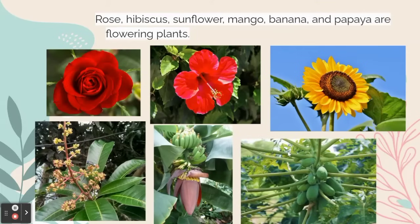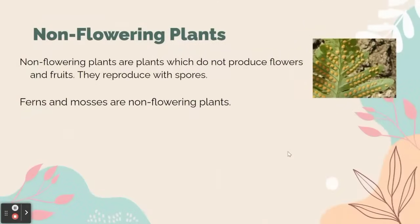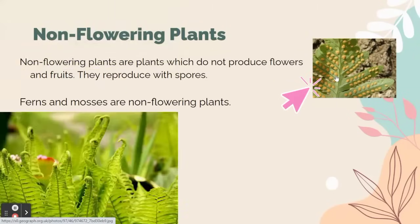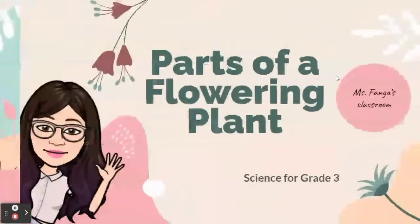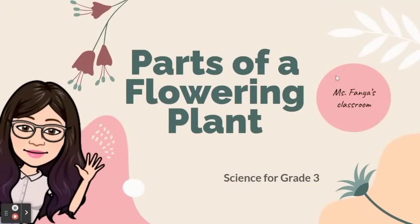Now let's learn about non-flowering plants. Non-flowering plants are plants which do not produce flowers and fruits. They reproduce with spores. Ferns and mosses are non-flowering plants.